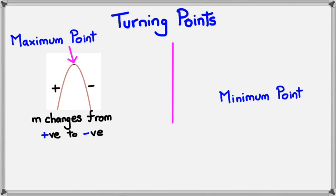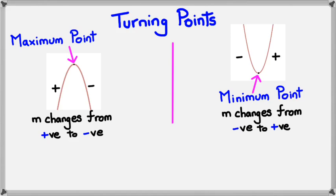So when m, the gradient, changes from positive to negative, it'll definitely be a maximum point. For minimum point, it's going to be the opposite — the minimum point is right at the bottom, so that's the lowest y value that you could have. And for this, your gradient actually changes from negative to positive. So when your gradient changes from negative to positive, it will be a minimum point.